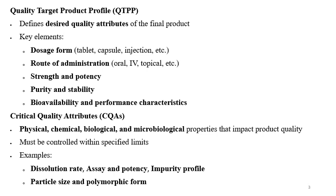Dosage form of pharmaceutical products may be tablet, capsule, injection, cream, or other formulations. Route of administration may be oral, IV, topical, or other routes. Strength and potency, purity, and stability are also key elements. Stability should be sufficient so the product is safe to use during its shelf life period in the market, and the stability period should be justified. Bioavailability and performance characteristics should ensure the product is safe and effective for patient use.